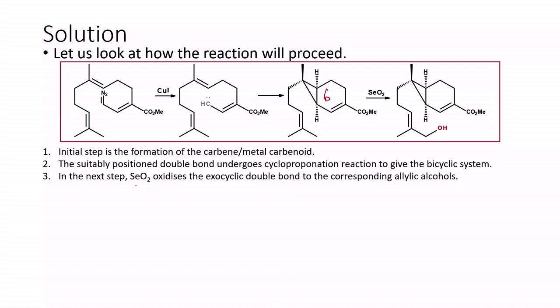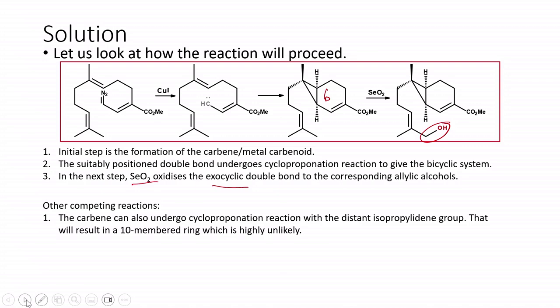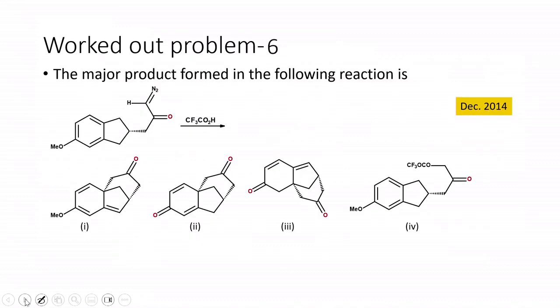When this compound is subjected to selenium dioxide oxidation, the exocyclic double bond is converted to the corresponding allylic alcohol. This is the crucial step. We can clearly say this is the product formed. The carbene can also undergo cyclopropanation with the isopropylidene group, but that would result in a 10-membered ring, which is highly unlikely. So the carbene insertion will not take place on that distant double bond — it will only happen on the nearby double bond.